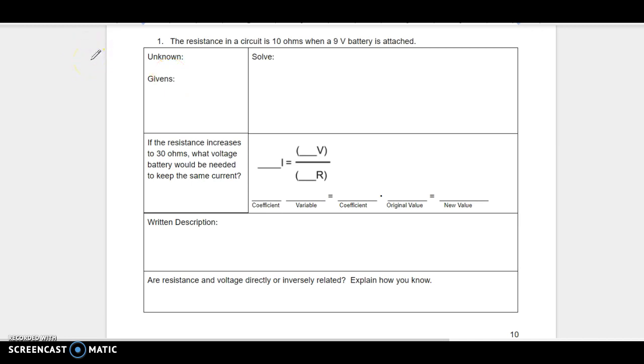All right, the resistance in a circuit is 10 ohms when a 9 volt battery is attached. Okay, so the first thing you're going to have to pick out is what these things are, probably by the unit. So remember, resistance is measured in Ohms, current is measured in Amps, and voltage is measured in volts. Make sure you know those things when you see them in the problem.